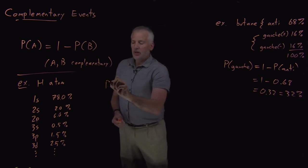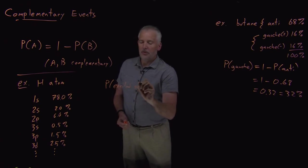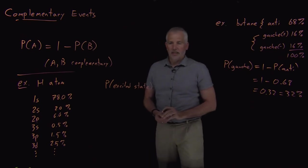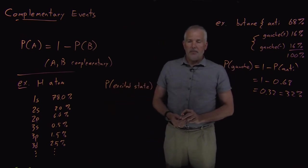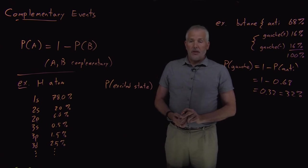Let's suppose what I want to know is what's the total probability that that molecule, that atom of hydrogen is in some excited electronic state, that the electron is not in the ground state, the 1s state, but it's in one of the various excited states.